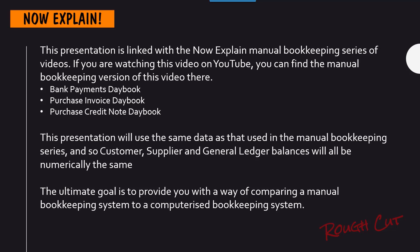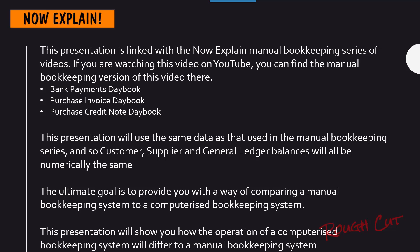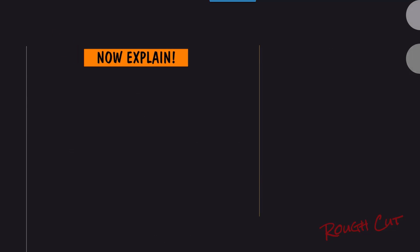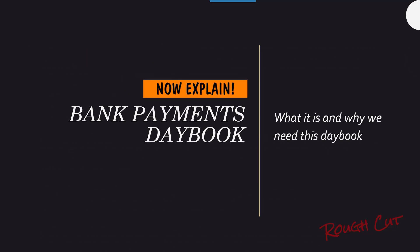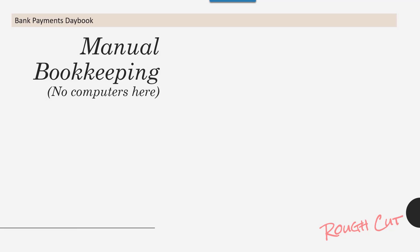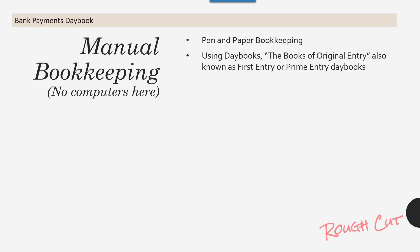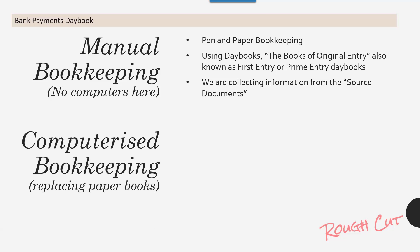The ultimate goal is to provide you with a way of comparing a manual bookkeeping system to a computerized bookkeeping system. This presentation will show how the operation of a computerized bookkeeping system differs from a manual one. Bank payments daybook: what it is and why we need it. Manual bookkeeping uses pen and paper day books — the books of original entry, also known as first entry or prime entry — collecting information from source documents.